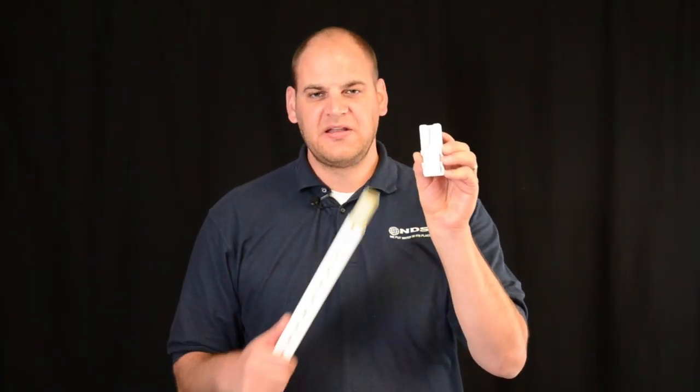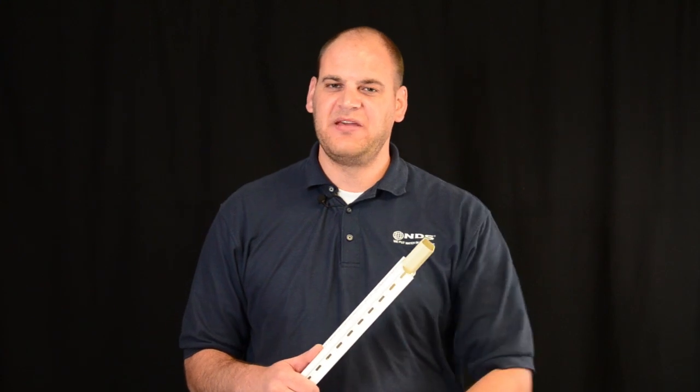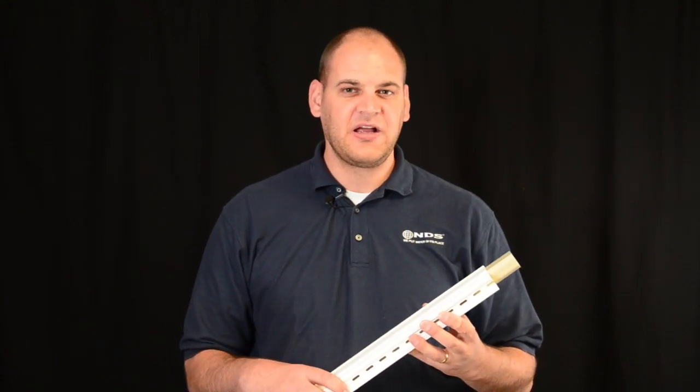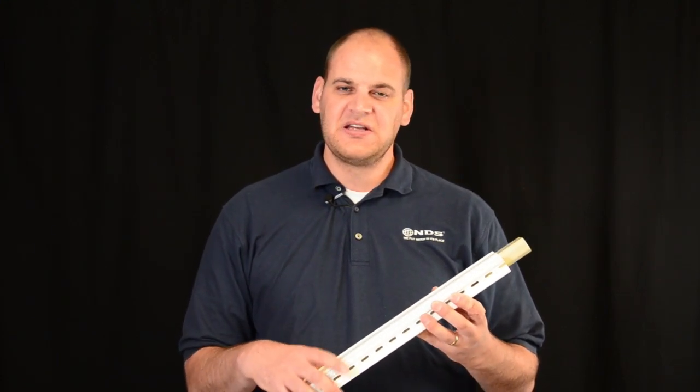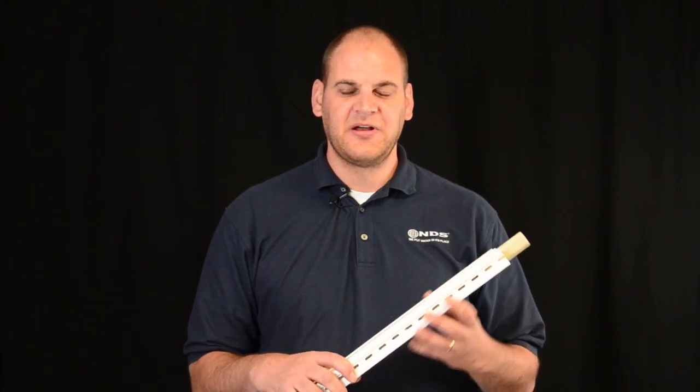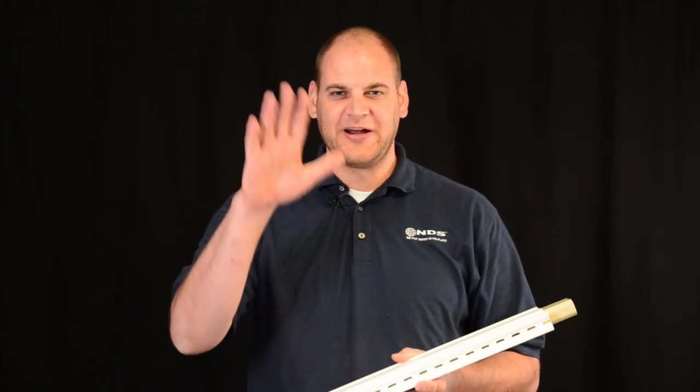To end your run, use the end cap. The channel and its accessories are made out of PVC, making it easy to cut and glue using PVC glue. To make a watertight seal, use clear waterproof silicone. I'm Dr. Drainage, see you later.